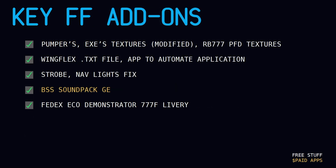Other Flight Factor add-ons I've used: on the forums and in the guide, you'll see there's something called Pumper's Textures. They're very old — from 2015 or so — but they're highly relevant. There's another post from a guy called EXE's Textures. He modified Pumper's Textures and made some changes to the colors of the interior. I don't think it's particularly great, but there are some pieces of that texture set that you need. And then the last one is RB777's PFD Textures. These change the colors of the PFD to much more accurately reflect the real-world 777 PFD, ND, ICAS, and so on.